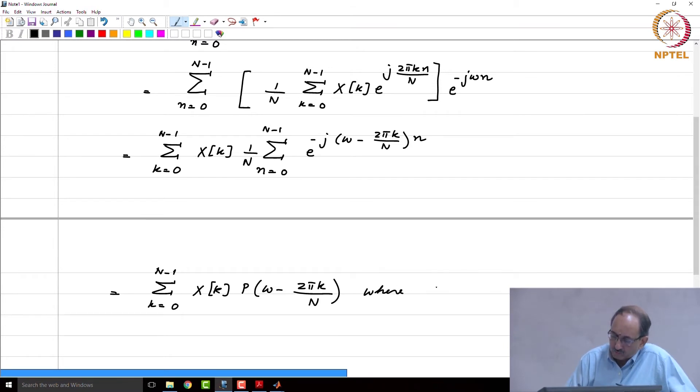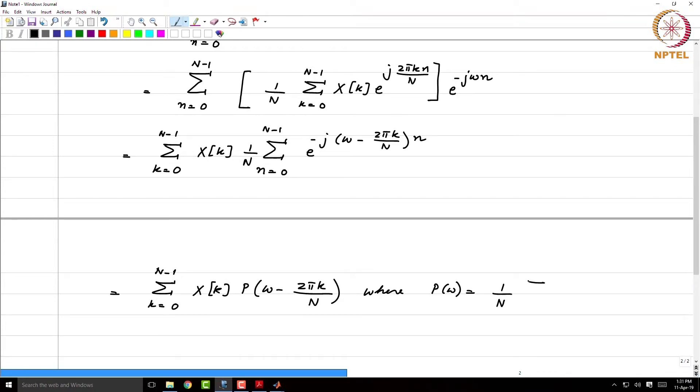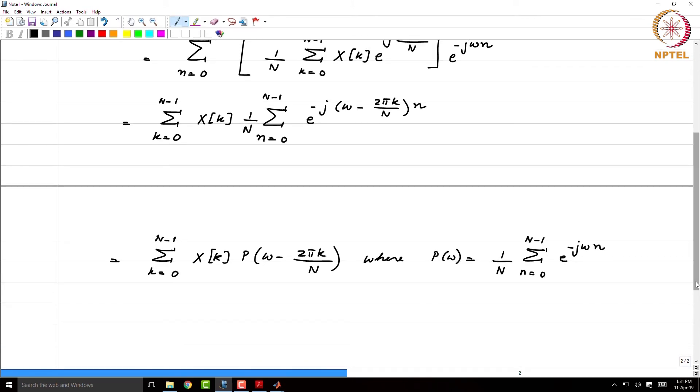Where P of omega is 1 over N, n going from 0 to N minus 1, e to the power minus j omega n, which equals e to the minus j omega times N minus 1 by 2, times sin N omega by 2, by sin omega by 2, which we have seen any number of times before.